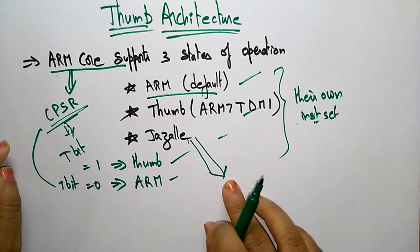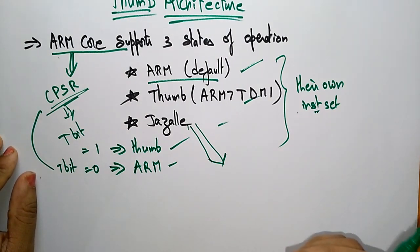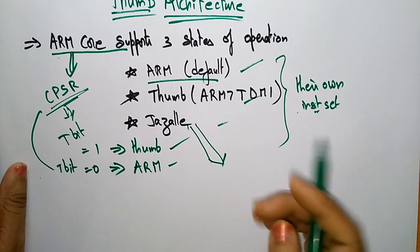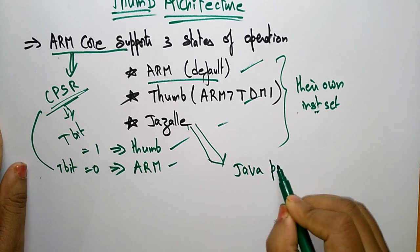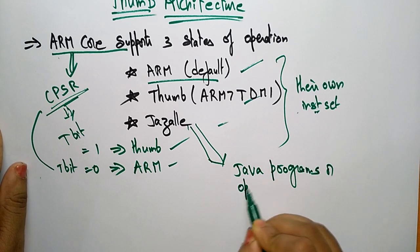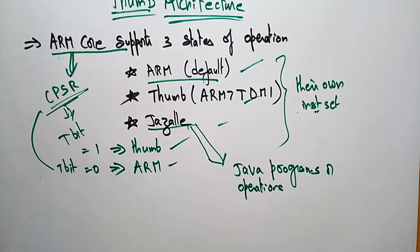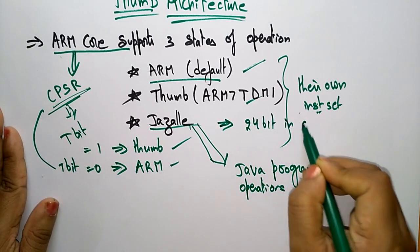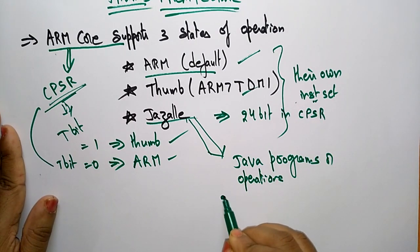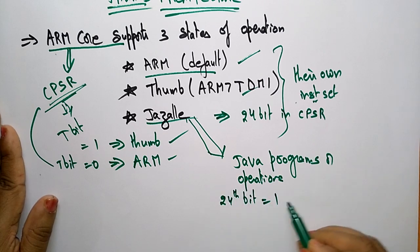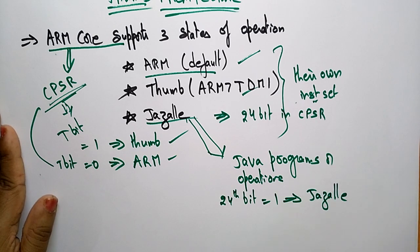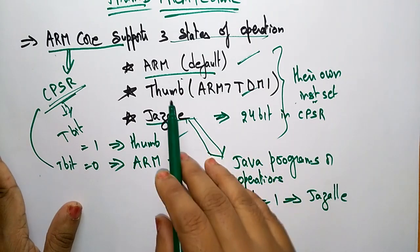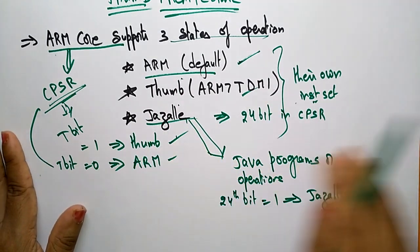Jazelle is a state which helps in increasing the efficiency of Java-based operations, mainly for Java programs or operations. This state is helpful in increasing the efficiency of Java-based operations when run with ARM code. Jazelle is based on the 24th bit in CPSR — if the 24th bit is equal to 1, then it is Jazelle. So these are the states of operations: ARM, Thumb, and Jazelle.